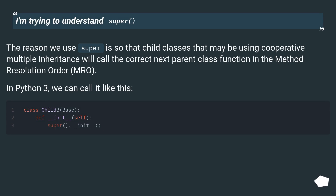The reason we use super is so that child classes that may be using cooperative multiple inheritance will call the correct next parent class function in the method resolution order (MRO).